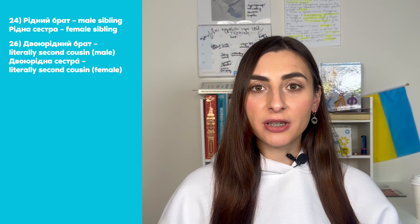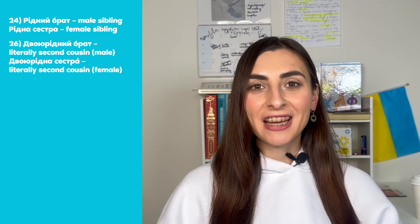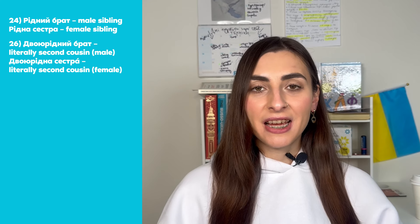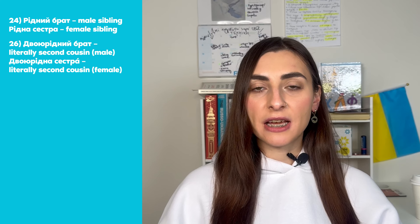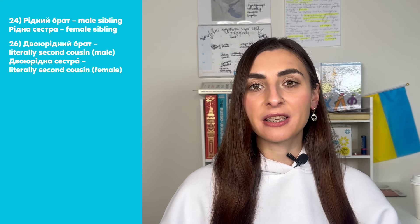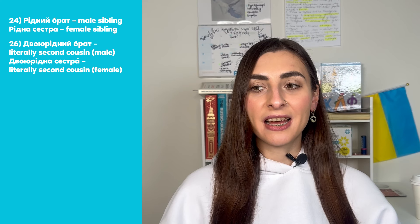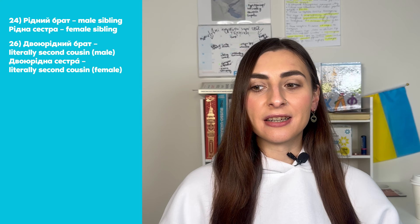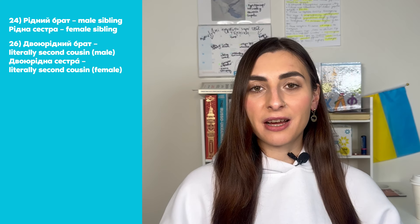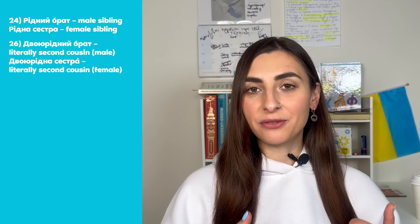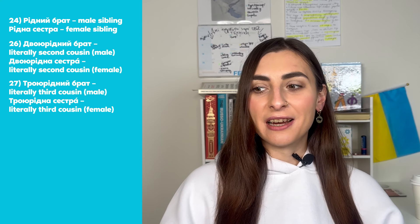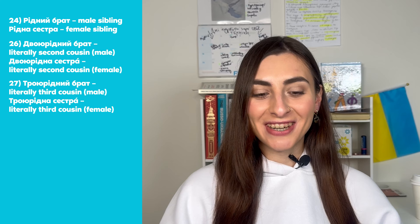Then we have двоюрідний брат, or двоюрідна сестра — you can translate it as 'cousin.' We also have the equivalent words кузен (male cousin) and кузена (female cousin). Двоюрідний means second cousin — for example, my uncle's children are my двоюрідний брат і двоюрідна сестра. You can also say троюрідний брат, троюрідна сестра for third cousin, четвероюрідний for fourth cousin, and so on. It can get very complicated!